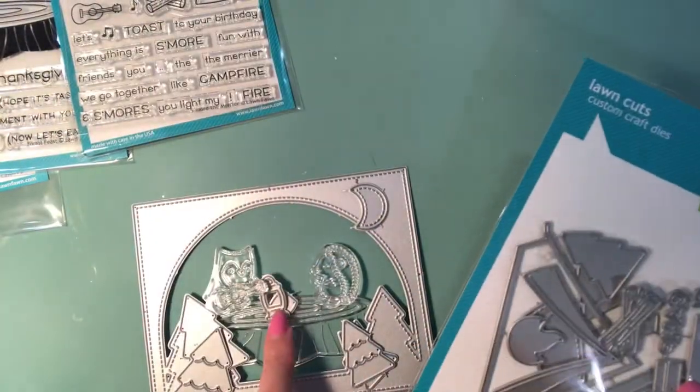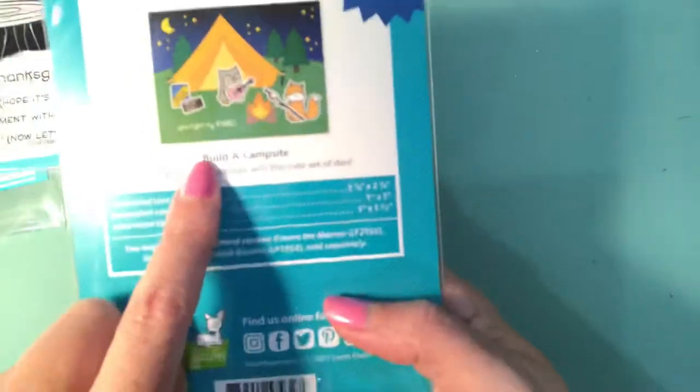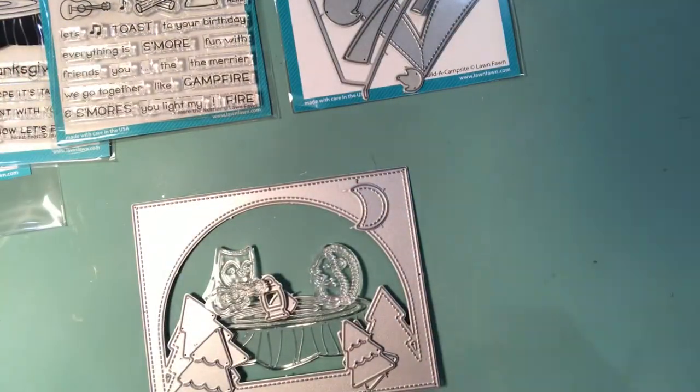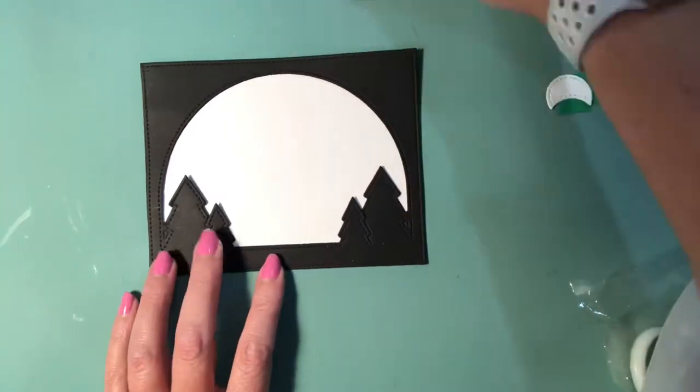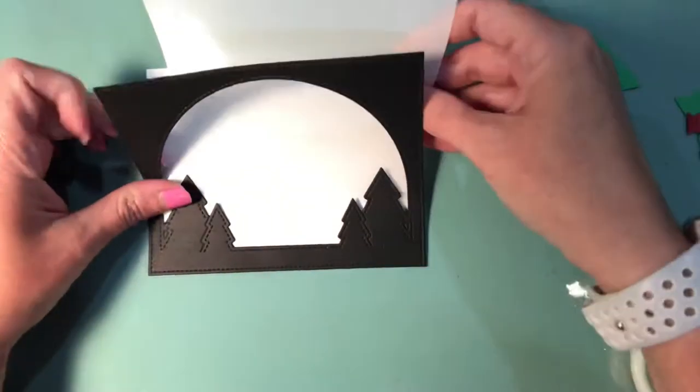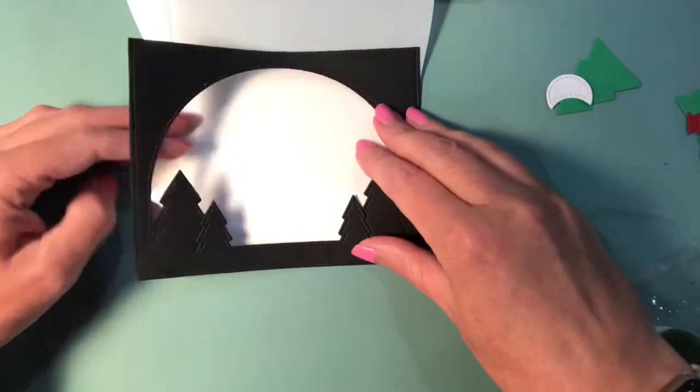We're going to be creating a double acetate shaker card and I've never done one of these before, so you guys are going to have to let me know in the comments how I did. I think it came out okay but I'd love to hear your opinions and if there are tips or tricks that you would show me to do this card better.